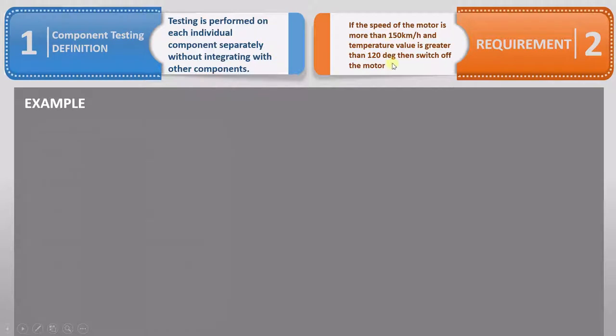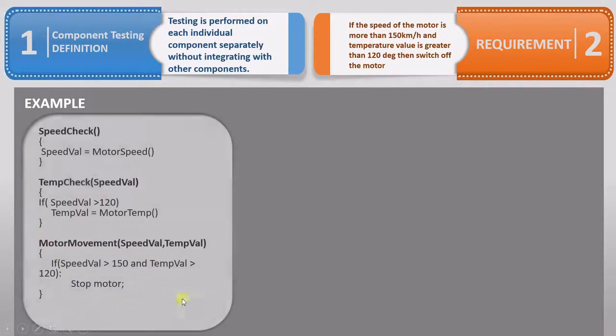For this requirement, the developer writes the following code, which he divides into three functions. In the first function, he checks the speed of the motor. In the second one, he checks the value of the temperature. In the third one, he controls the motor. Should it stop or keep running?